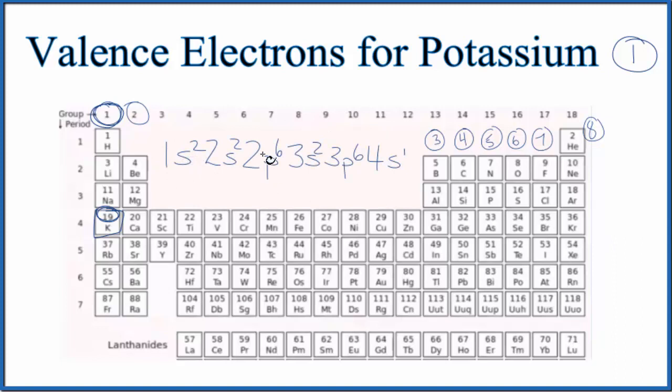So this is the electron configuration for potassium. You add these numbers up on top, you'll get 19. So there are a total of 19 electrons for the potassium atom. But we're only interested in the valence electrons. Those are the electrons in the highest energy level. Think of it as the outer shell.